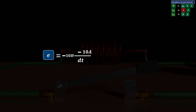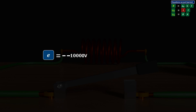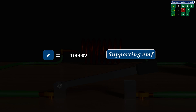The time taken by the current to become zero is simply the time taken by the switch to break the circuit, which is very small — let us assume dt is 0.01 seconds. After solving this equation, we get 10,000 volts. The minus signs cancel out, which shows that this time the EMF induced is supportive and in the same direction as the battery. It is interesting to note that the EMF of 10,000 volts is induced by the coil to support the dying current, and sometimes it is even higher depending on conditions.